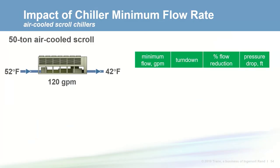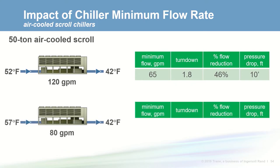The example here is a 50-ton air-cooled chiller with a brazed plate heat exchanger — probably the least configurable product in terms of evaporator selection. The original design has a design flow of 120 GPM. The minimum flow for this chiller is 65 GPM, giving a flow turndown of 1.8 to 1, or a 46 percent flow reduction. Using the exact same chiller but reducing flow to get a 15 degree delta T — 57 entering, 42 leaving — the design flow reduces but the minimum stays at 65 GPM, and the flow turndown drops to only 1.2 to 1, well below the recommended 2 to 1 for variable primary flow systems.